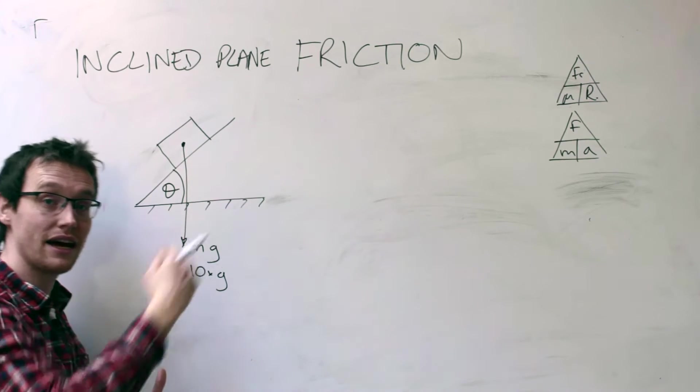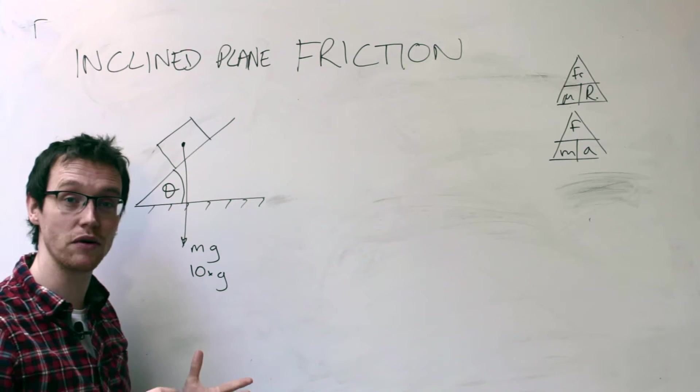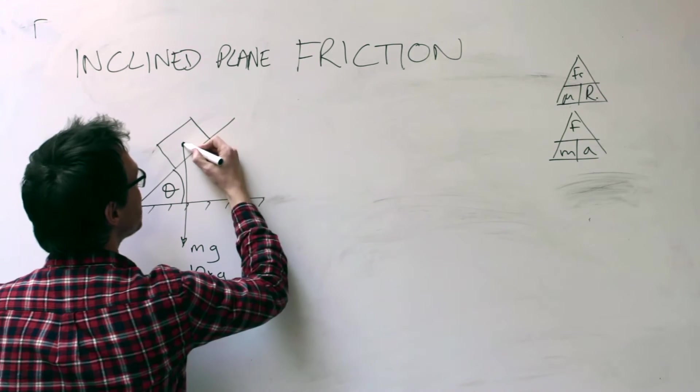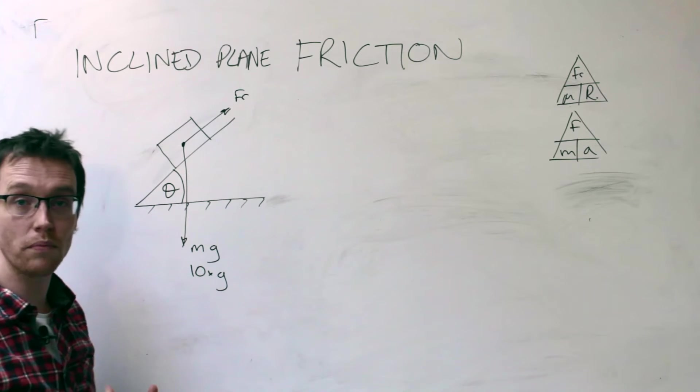This thing is going to try and slide down the slope. We know already from the last video that friction always opposes motion. So if the direction of motion is going to be this way, then it makes sense that the frictional force will be acting up the slope.